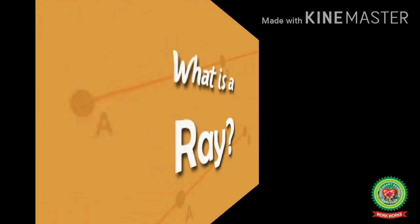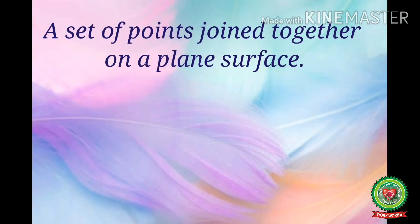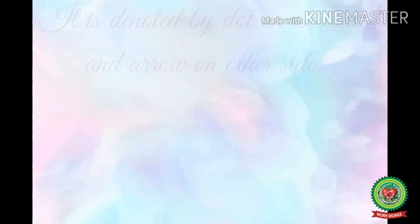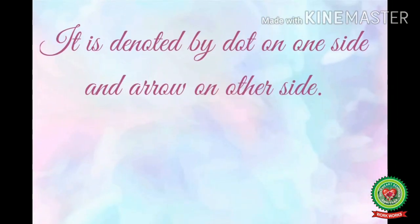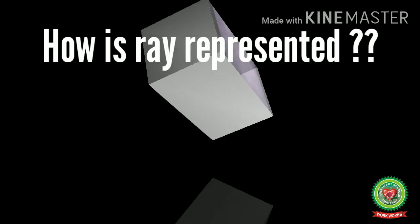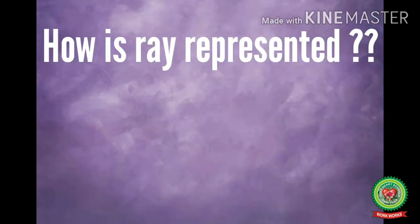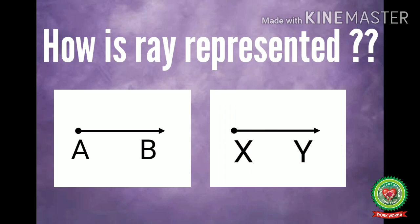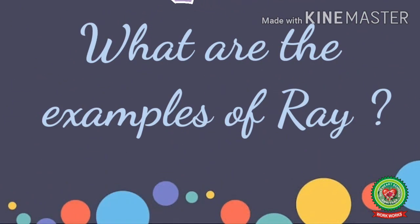Now it is time to learn what is ray. A set of points joined together on a plane surface is called a ray. Children, it is denoted by a dot on one side and an arrow on the other side. You can see that in the figure given. Now, how is ray represented? Ray is represented just as the figures given in your slide.